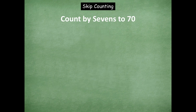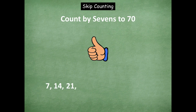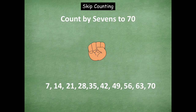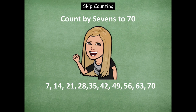Let's count by sevens to 70. Counting up: seven, 14, 21, 28, 35, 42, 49, 56, 63, 70. Awesome counting by sevens to 70 forwards and backwards.